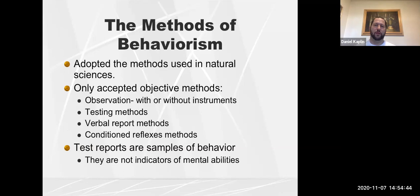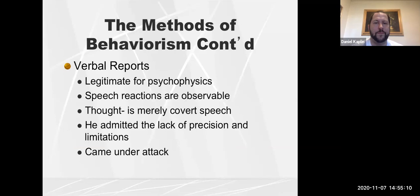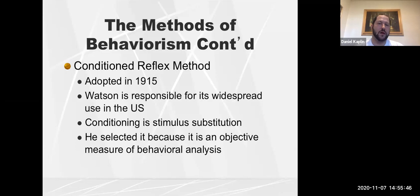According to Watson's model, only objective methods are allowed: observation with or without instruments, directly observable behavior, testing, verbal report, and measuring conditioned reflexes. For verbal reports, Watson said they were legitimate for psychophysics and that speech reactions are observable — thought was merely covert speech. This opened him up to criticism since language is a cognitive process. He eventually admitted that verbal reports have less precision. The conditioned reflex method was adopted in 1915 and Watson was responsible for its widespread use in the United States.